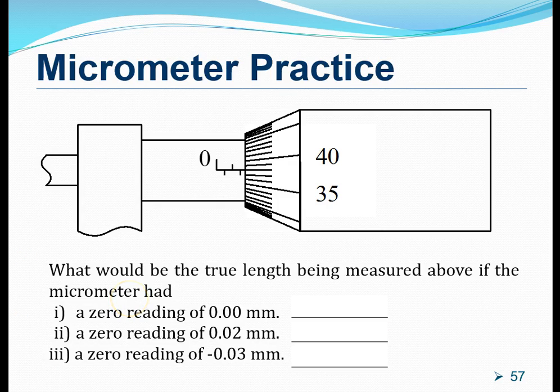Let's have some practice. What would be the true length measured if this micrometer had no zero error? The main scale reading should be 1.5 millimeters and this marking corresponds to the 38th marking. The thimble scale will be 0.38 millimeters. Adding these two up, we will get 1.88 millimeters.